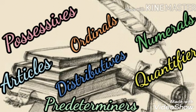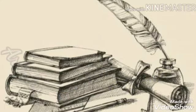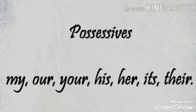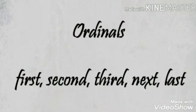These types of words come under the category of determiners. Let's see a detailed explanation. First, possessives — my, our, your, his, her, its, their. These words are called possessives. Next, ordinals — first, second, third, next, last. These words are called ordinals. Possessives and ordinals come under another category of determiners.